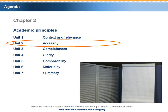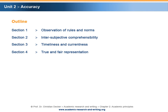In Unit 2, we will familiarize ourselves with the academic principle of Accuracy. This unit is divided into four sections. Let's get started with Section 1: Observations of Rules and Norms.